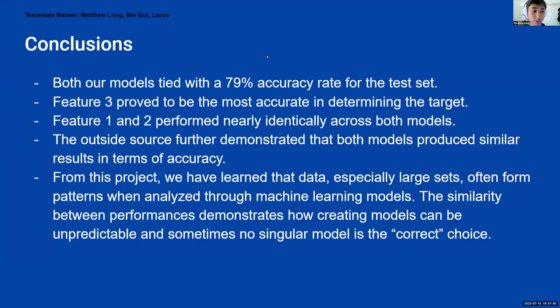So for conclusions, we found that both our models tied with a 79% accuracy rate for the test set, which we expected a bit higher, but I was also very surprised that both models produced the exact same accuracy. Feature 3 proved to be the most accurate in determining the target value, compared to features 1 and 2, which performed nearly identically. The outside source further proved that our models were very similar and that it's not necessarily a fluke in our testing, but rather the dataset itself has a very similar correlation, regardless of what model we choose to use.